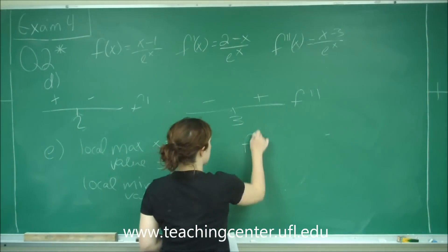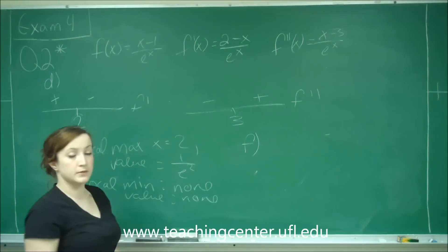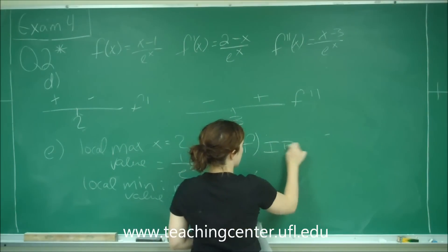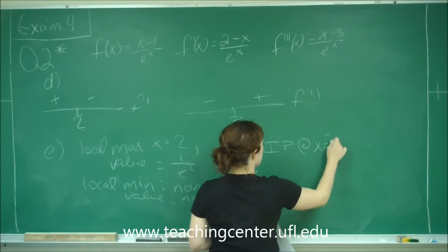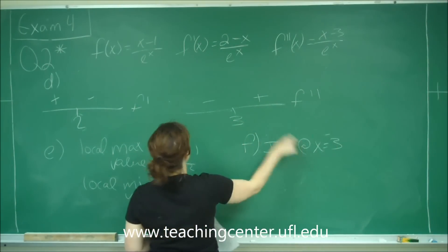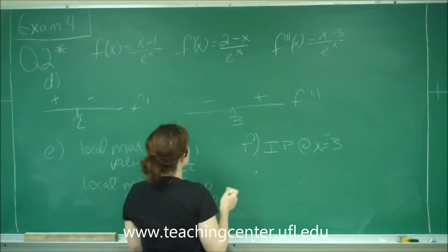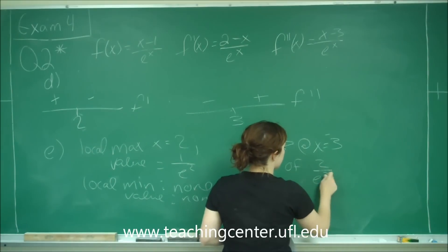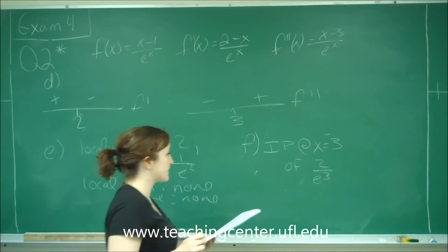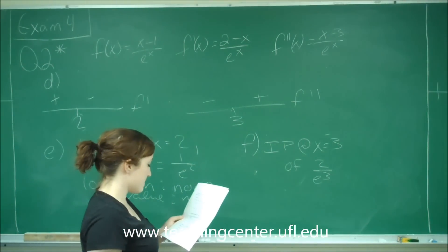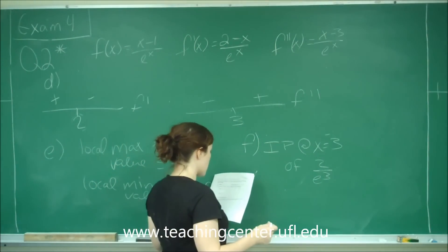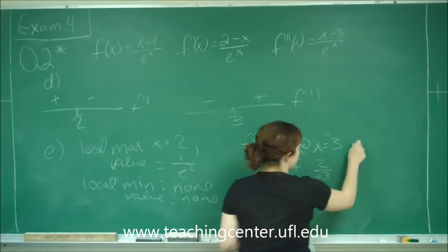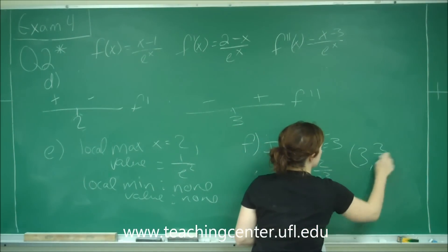Part F wants to know inflection points, so we move to our second derivative. We have an inflection point at x equals 3. Plugging 3 back into the original function gives 3 minus 1 over e cubed, which is 2 over e cubed. So the inflection point is the coordinate (3, 2 over e cubed).